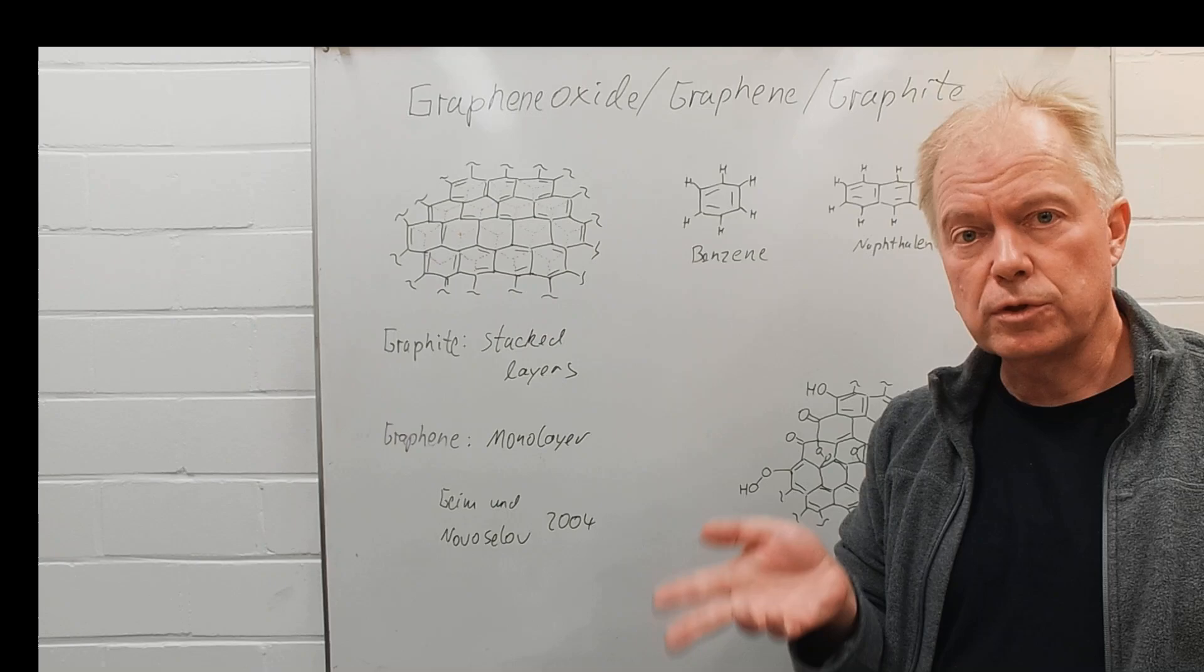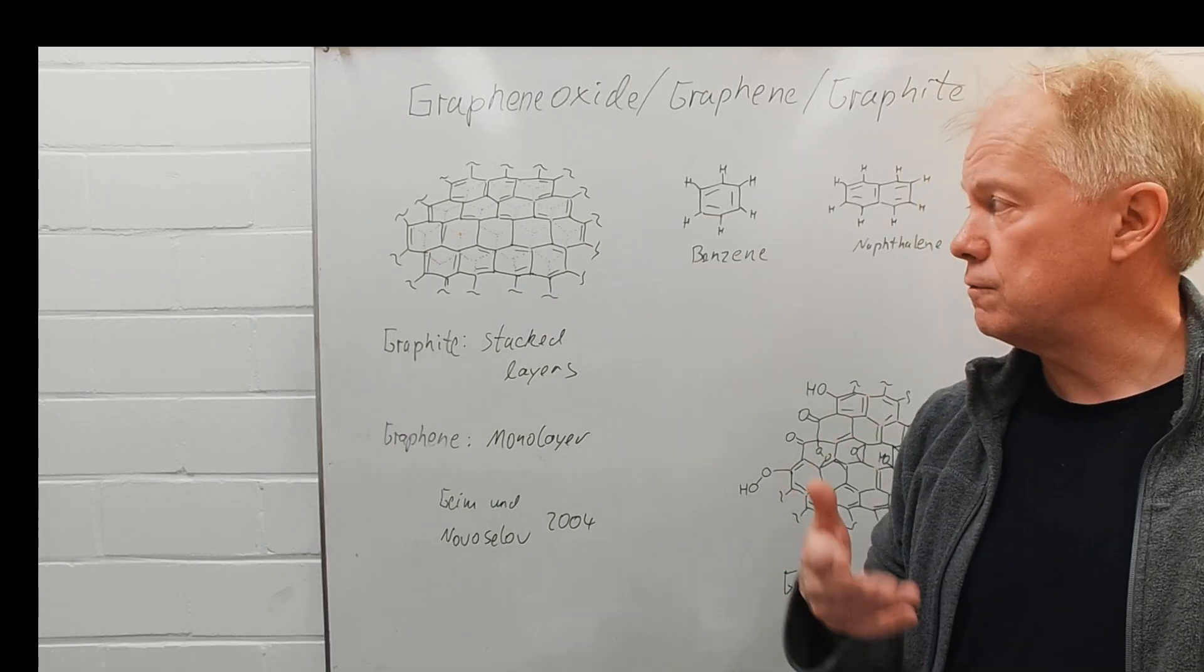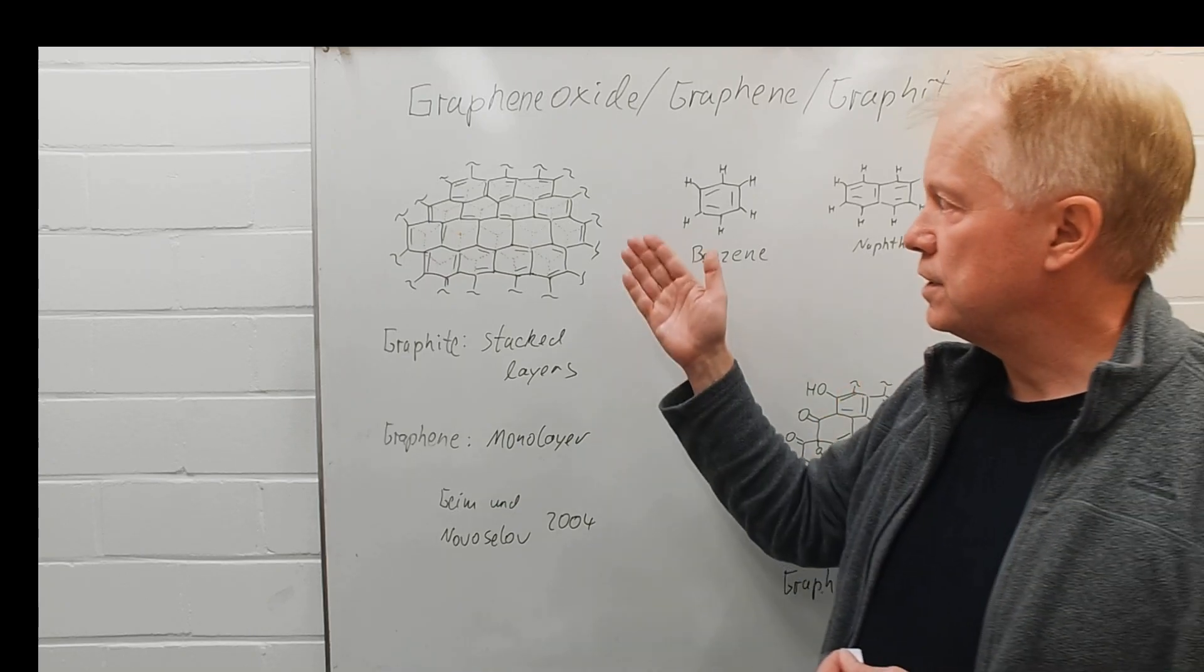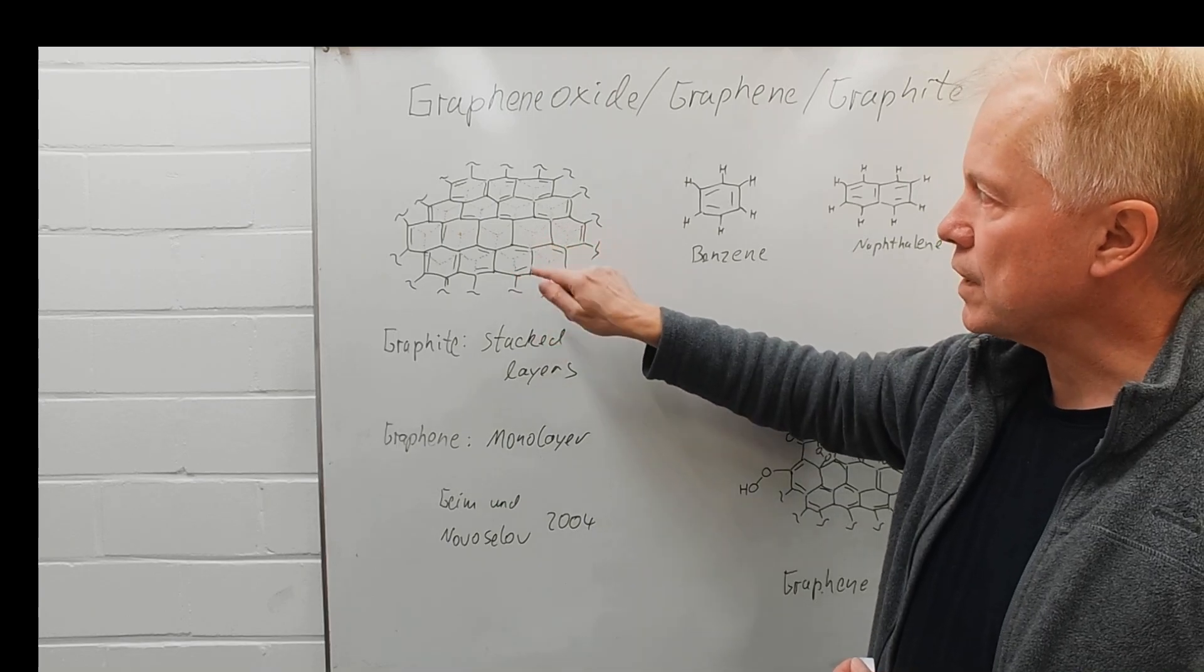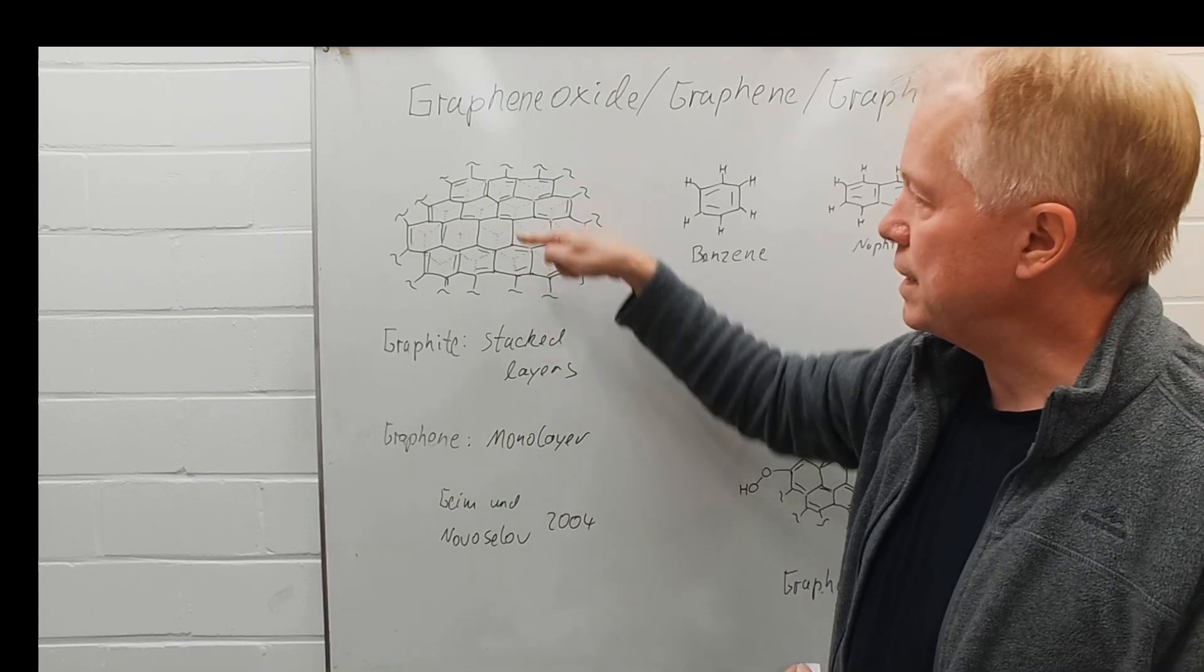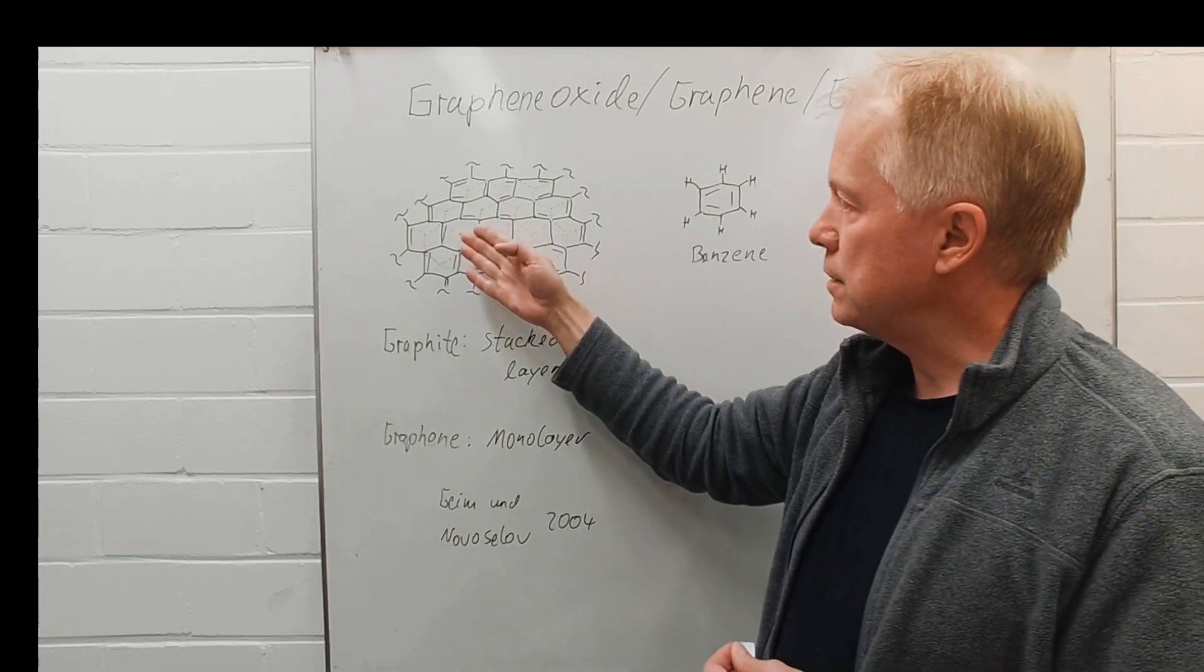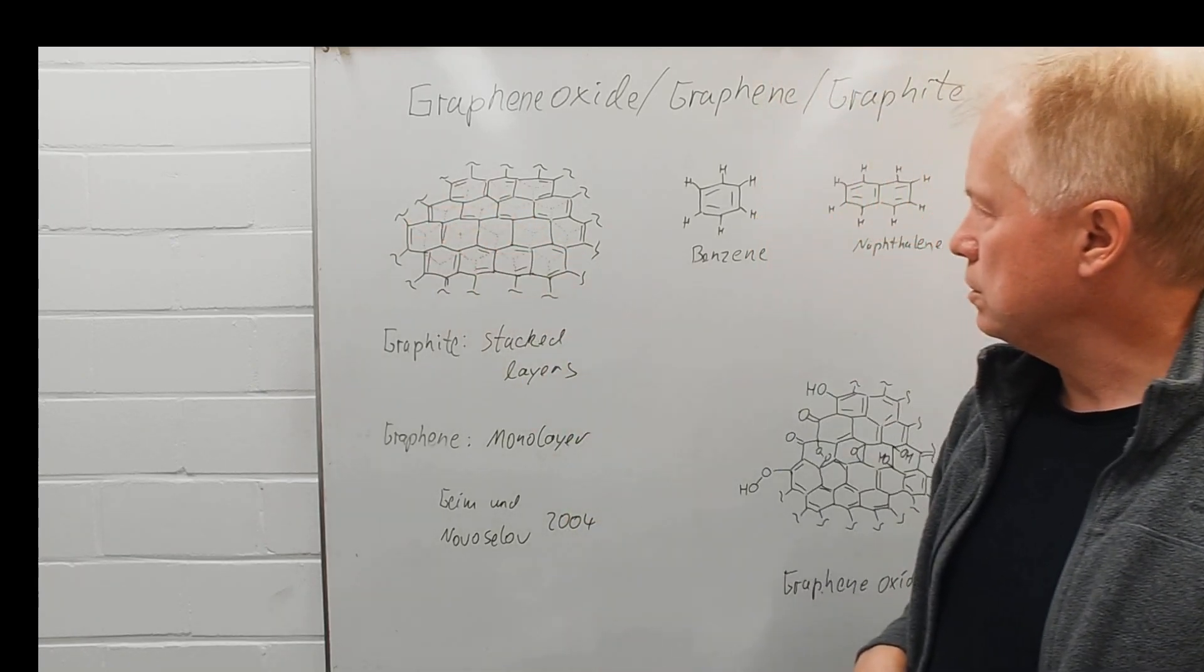Well we all know graphite as a component of pencils and it consists of stacked layers of carbon atoms. They are embedded within six-membered rings and it is unsaturated with conjugated olefins.